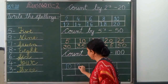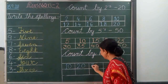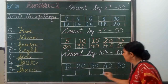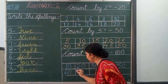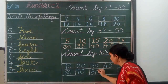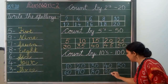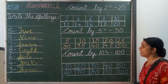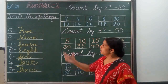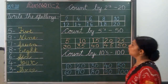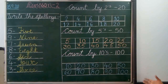10, 20, 30, 40, 50, 60, 70, 80, 90 and 100. That is 100. These 2 pages we have used for writing spellings and count by. Writing spellings and for count by you will get the attachment.